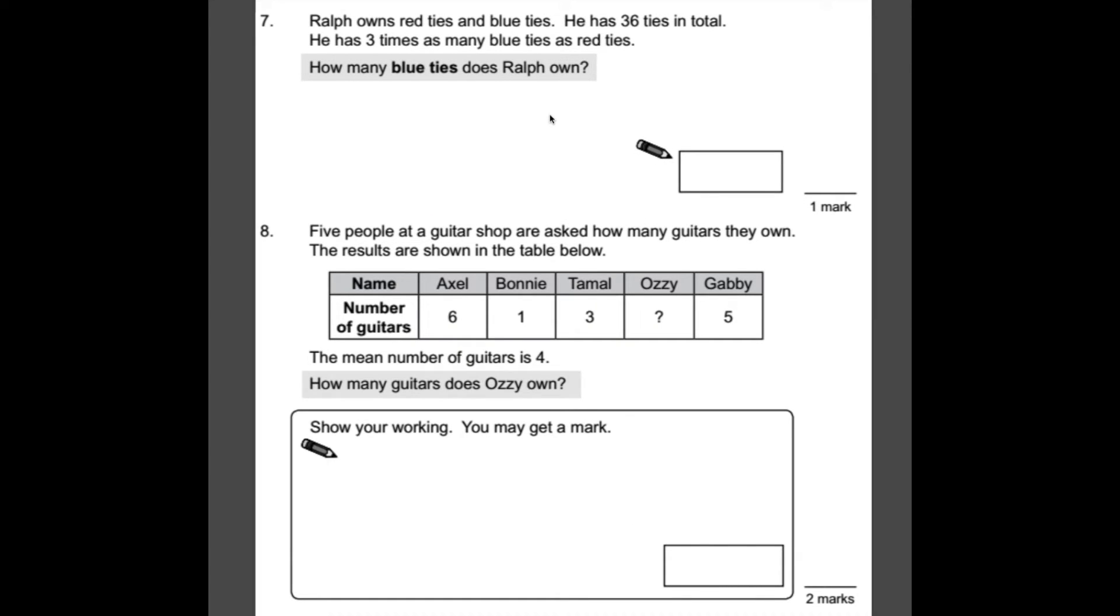Number seven, Ralph owns red ties and blue ties. He has 36 ties in total. He has three times as many blue ties as red ties. How many blue ties does Ralph own? Okay, thinking about this question then, he has three times as many blue ties as he does red ties. So if you imagine, these 36 ties can be broken into four chunks. We have the first chunk, which is his red ties, and then he has three times as many blue ties.